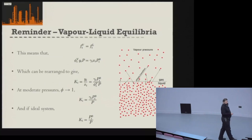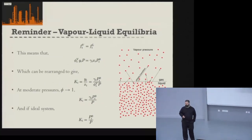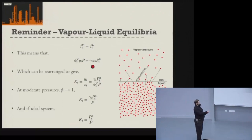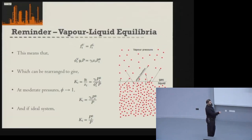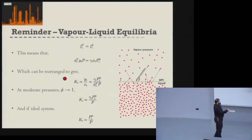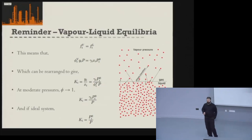Combining those two definitions for the fugacity of the vapor and liquid phase, we essentially arrive at an equation that must be true for any vapor-liquid system in equilibrium. We often rearrange this in terms of a K value, which is the ratio of the fraction of component i in the vapor phase to the fraction of component i in the liquid phase. That gives us K in terms of the activity coefficient, fugacity coefficient, saturated vapor pressure, and total pressure.